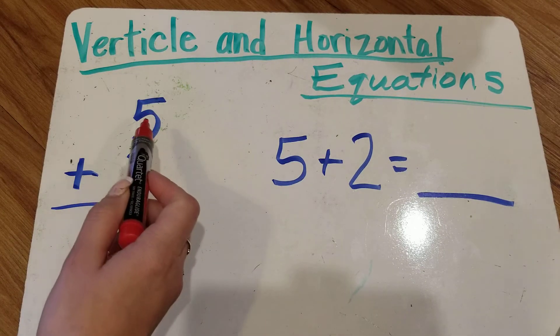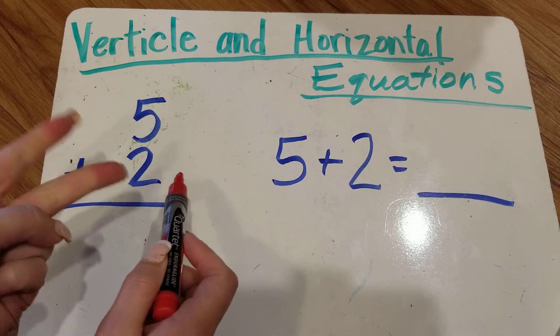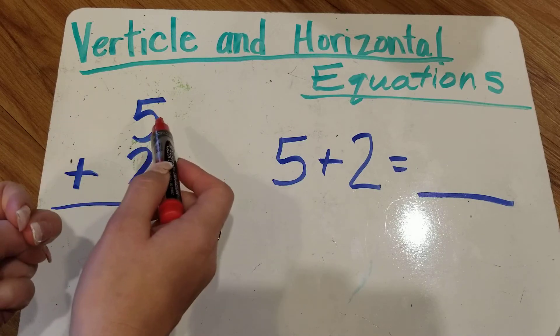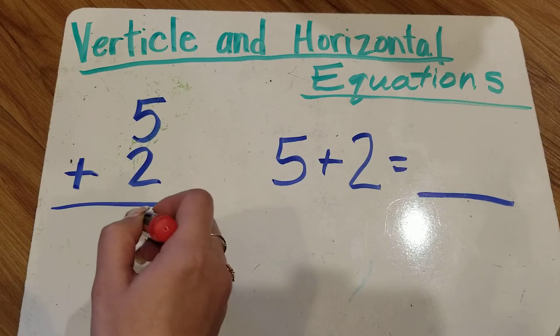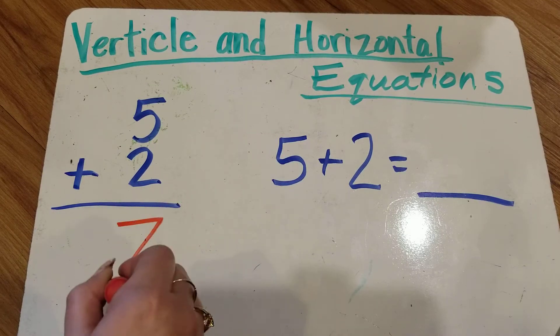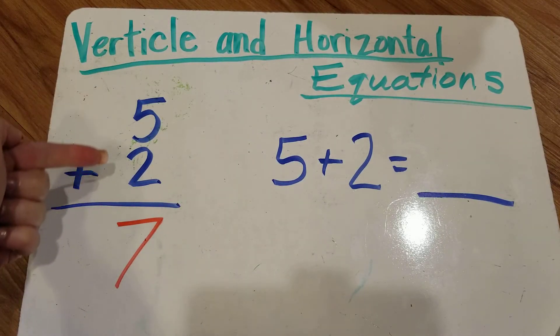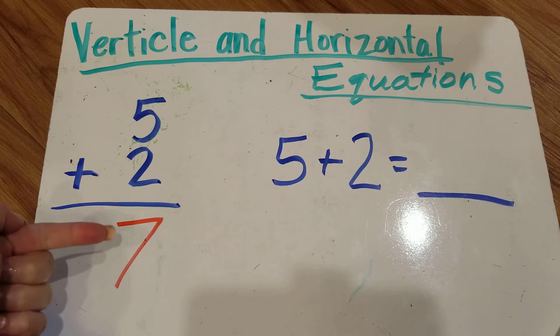I think in my brain 5. I hold 5 in my brain and I'm going to count on 2. 5, 6, 7. Counting on. I know the answer is 7. For vertical equations we put the answer under the line.